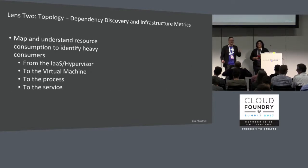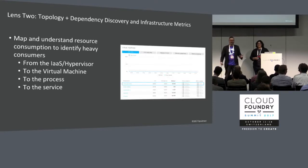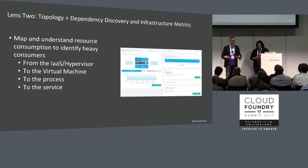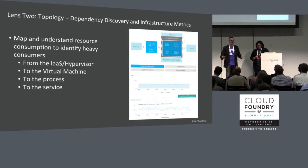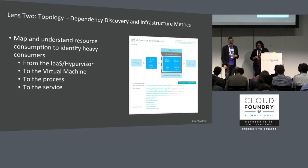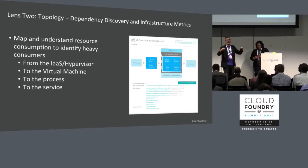We also want to look at things from a resource consumption perspective — at the hypervisor level and the virtual machine level. Are there really bloated monoliths where there might be cost savings in spreading the workload so you don't have to run 64-gigabyte virtual machines? Then at the process level, is there particularly poor garbage collection performance? And at the service level, which represents the actual user experience of that service — understanding how frequently services are being interacted with, from both the user experience level and the bottom-up infrastructure perspective.